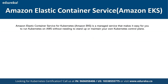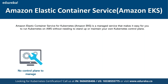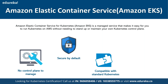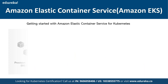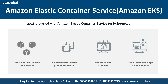In AWS there is a service called Amazon EKS — Elastic Kubernetes Service — for running Kubernetes on AWS. Amazon EKS is a managed service that makes it easy to run Kubernetes on AWS without needing to stand up or maintain your own Kubernetes control plane. AWS manages the control plane by default, and EKS is secured, compatible with standard Kubernetes, and works with the open-source Kubernetes community. You provision an EKS cluster, deploy worker nodes using CloudFormation scripts, connect to EKS, and run Kubernetes applications.